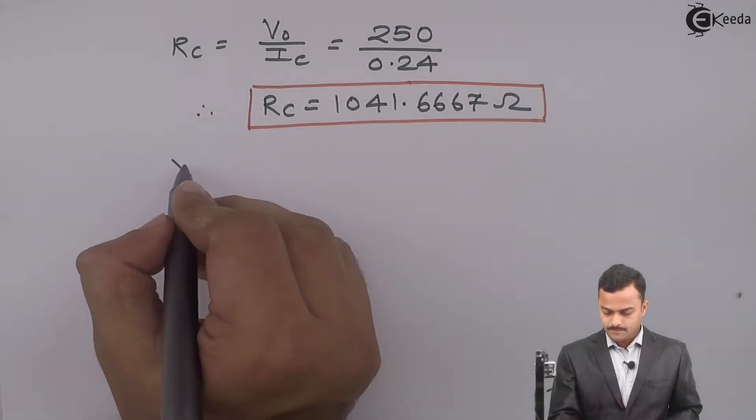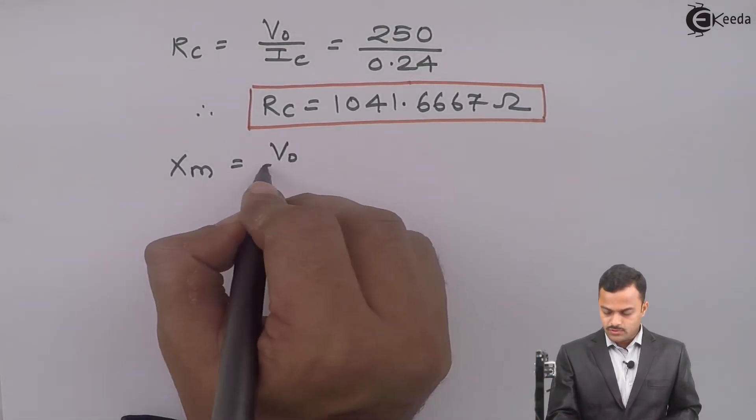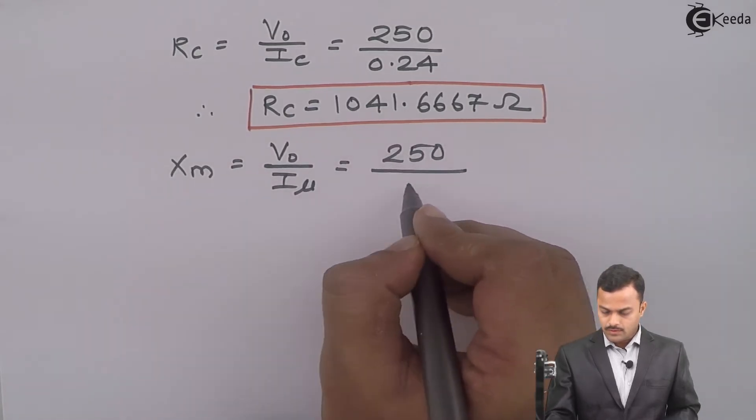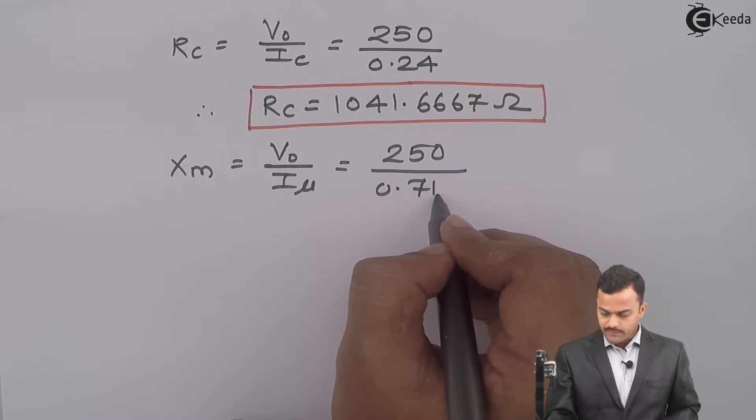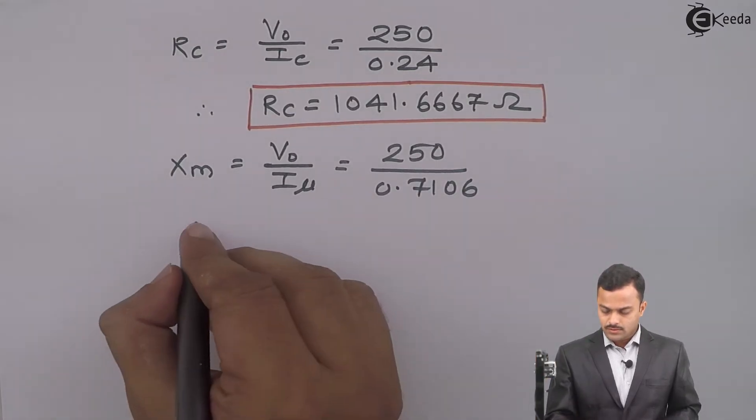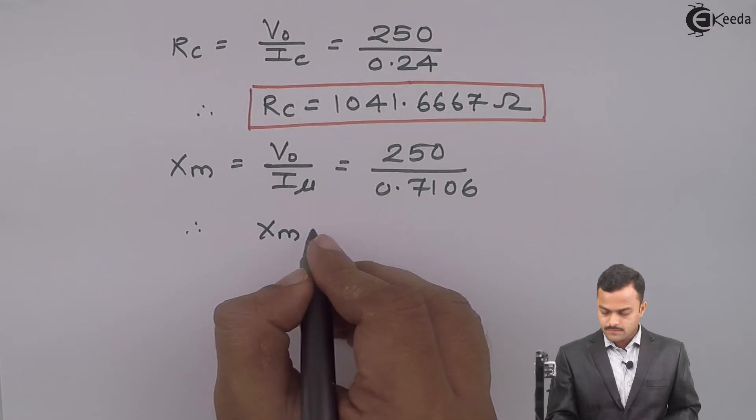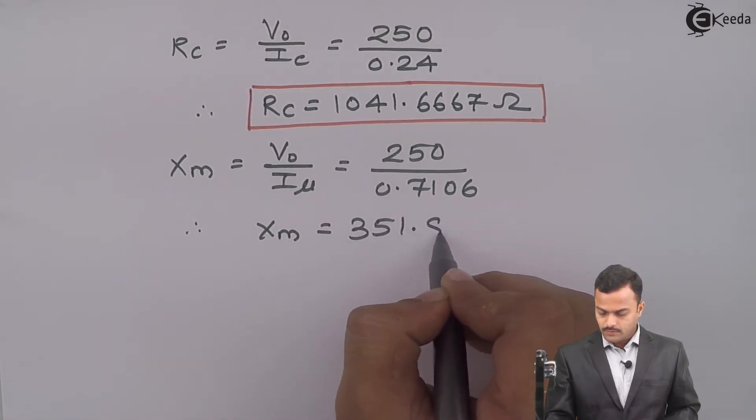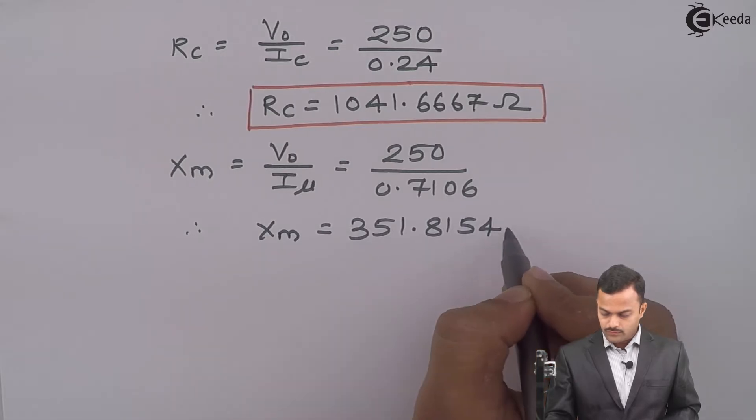Similarly, I can get XM equal to V0 upon Iμ, 250 upon 0.7106. If you solve, you will get XM equal to 351.8154 ohm.